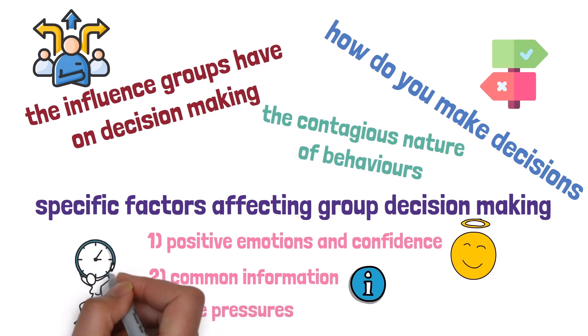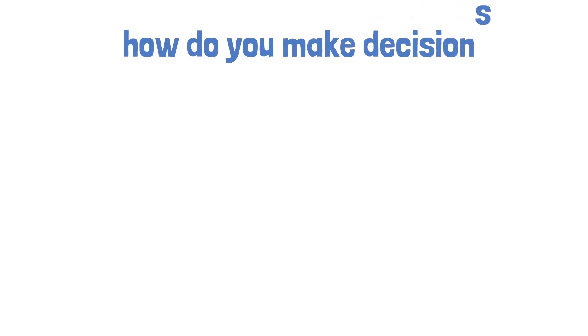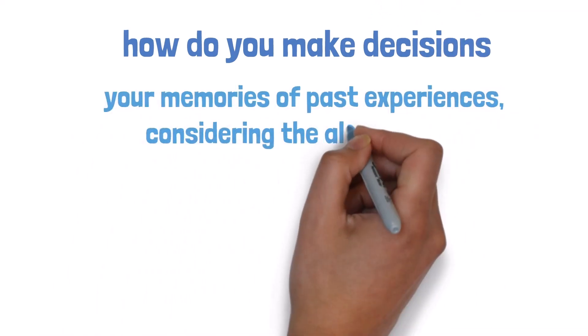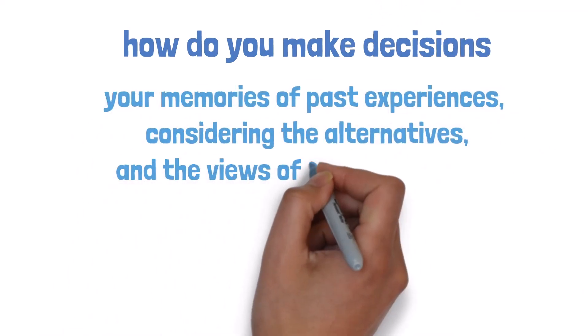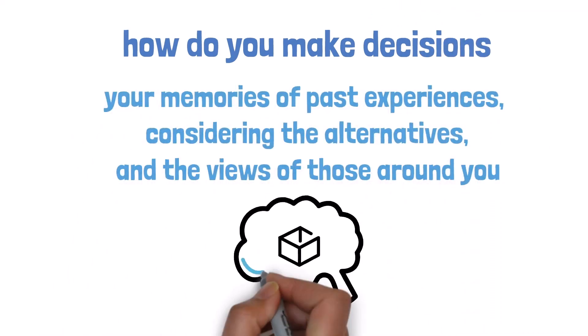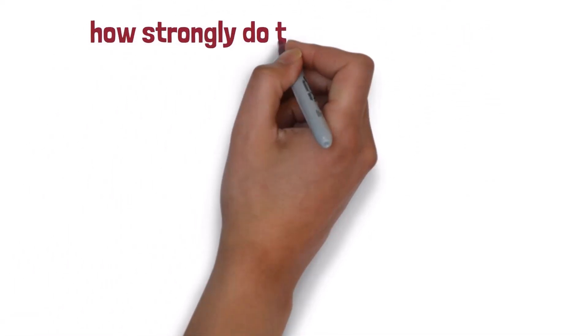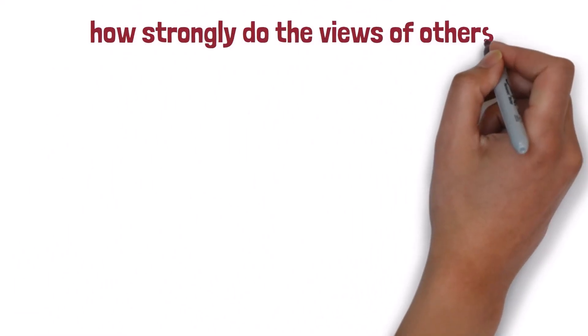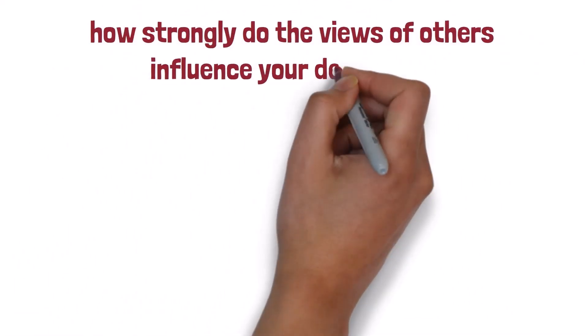Firstly, how do you make decisions? Your decisions are based on your memories of past experiences, considering the alternatives, and the views of those around you. But how strongly do the views of others influence your decisions?